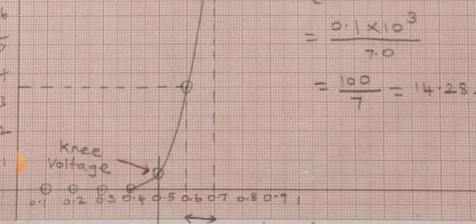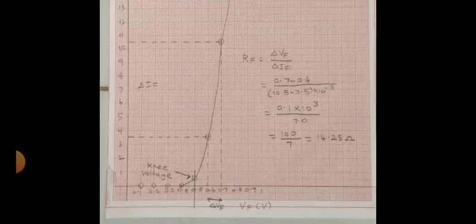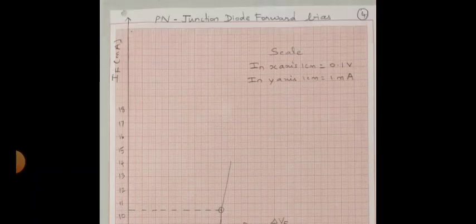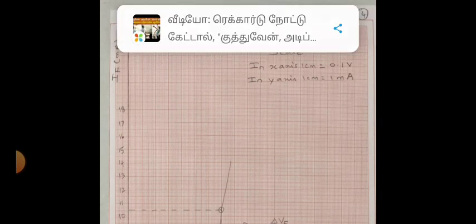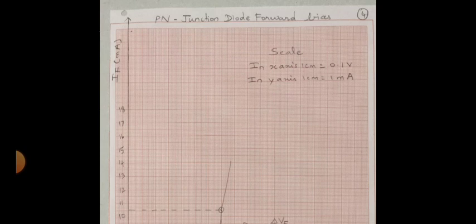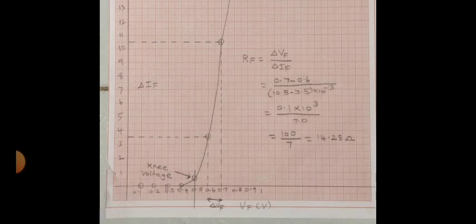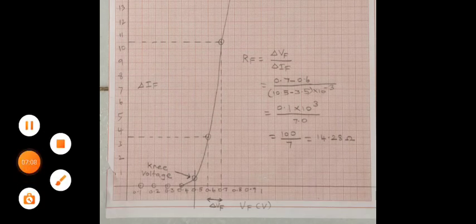For the graph scale: on the x-axis Vf is in volts — one centimeter equals 0.1 volt; on the y-axis If is in milliampere — one centimeter equals 0.1 milliampere. With the help of that scale, draw the graph. Thank you.